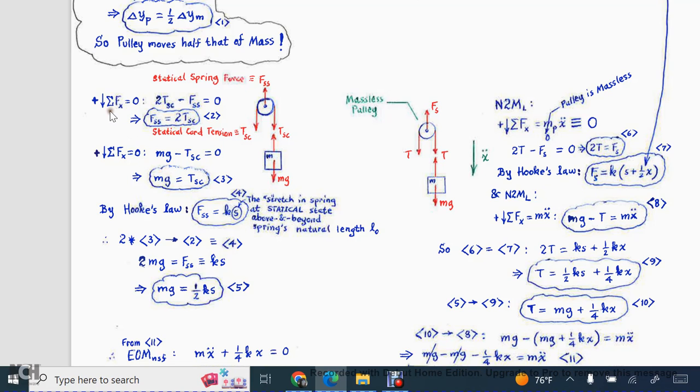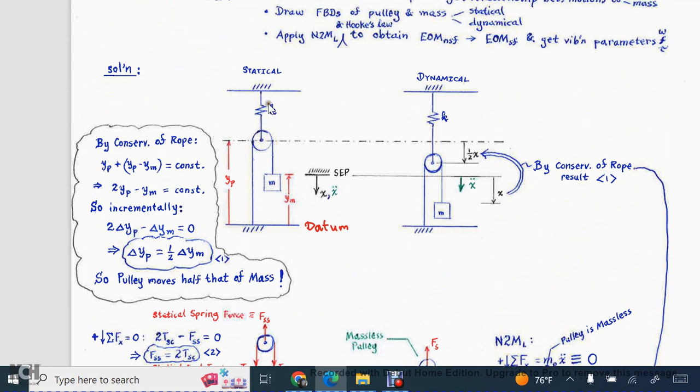When you apply your statics, I'm calling down to be positive. That's arbitrary. You find that the spring force statically is double that of the tension of the cord statically. Then you also, when you do the same thing for the mass, you see that the weight is directly equal to the tension, as you can see. Then when you apply Hooke's law, which basically says that the spring force is proportional to the stretch, assuming that the spring at this state, at the opening state, has a stretch amount of s, then obviously the spring force there is going to be k times s.